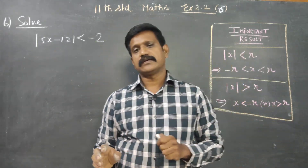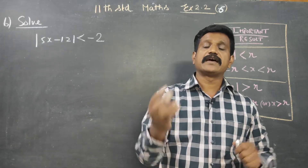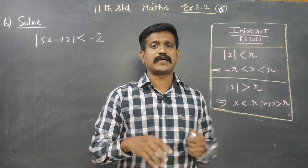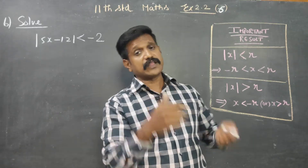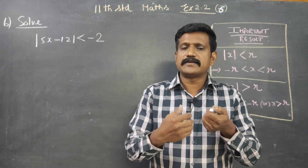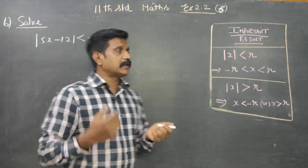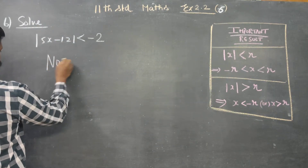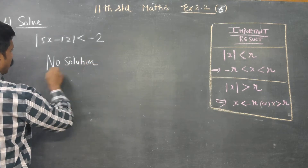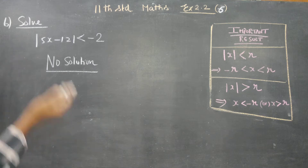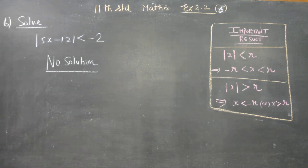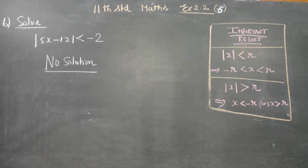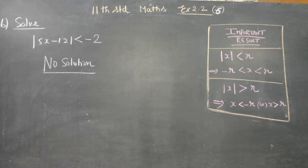So for the statement where absolute value is less than minus 5 or any negative number, the meaning is: no solution. The absolute value will always be greater than or equal to zero, so it falls only on the positive side. This is no solution.